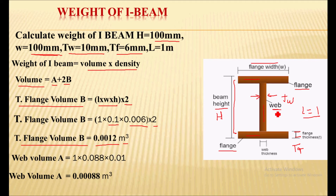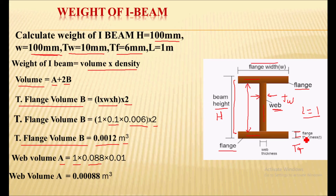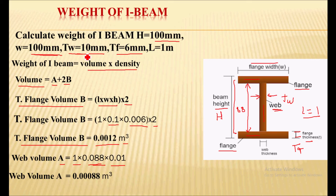Similarly, we calculate the web volume. Web volume A = length × width × height. Length is 1 meter. The web height is found by subtracting the two flange thicknesses from the total beam height: 100 mm − 6 mm − 6 mm = 88 mm, which is 0.088 m. Web thickness is 10 mm, that is 0.01 m. So web volume = 0.00088 m³.